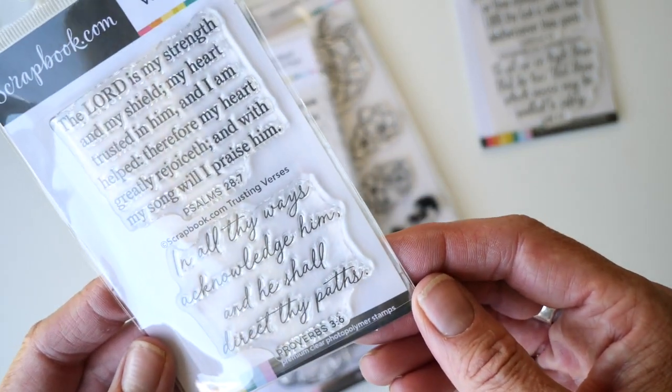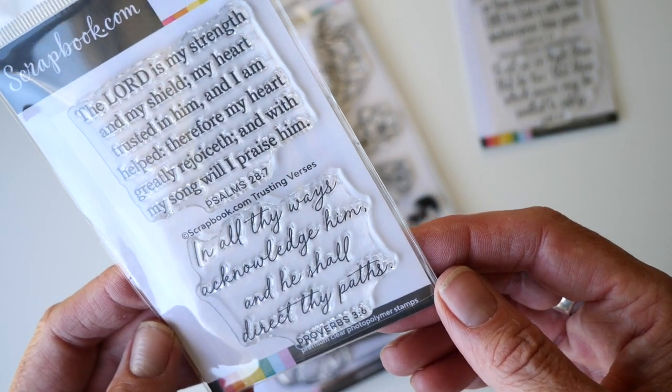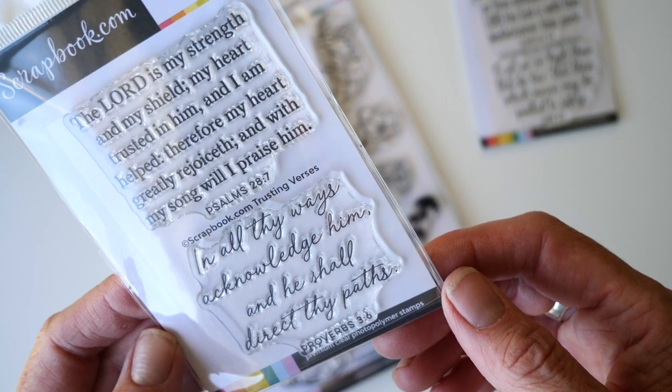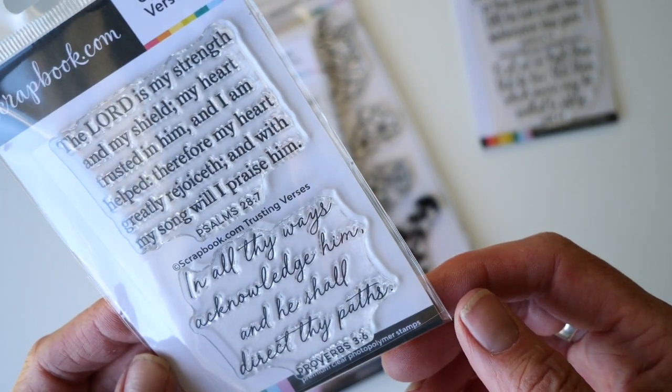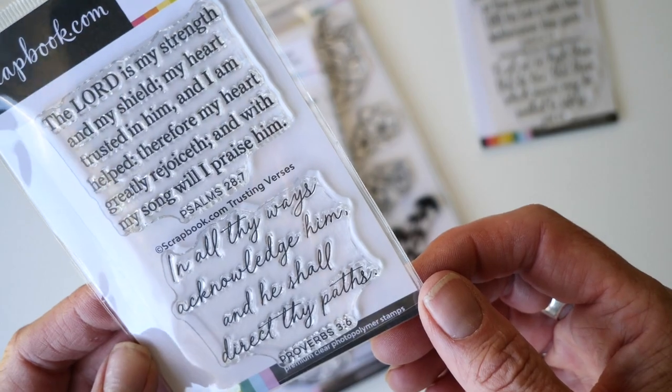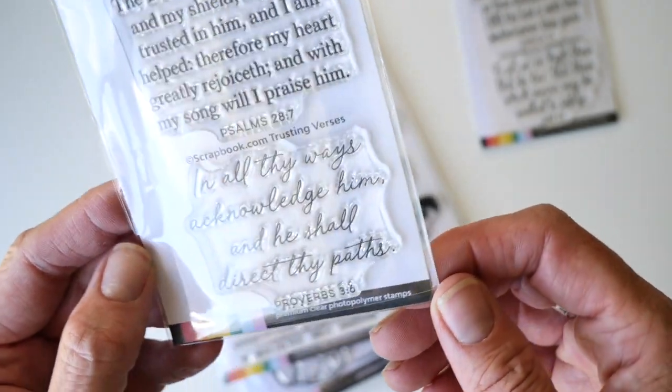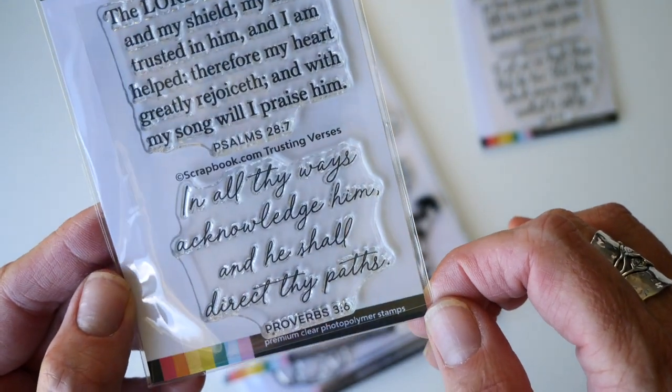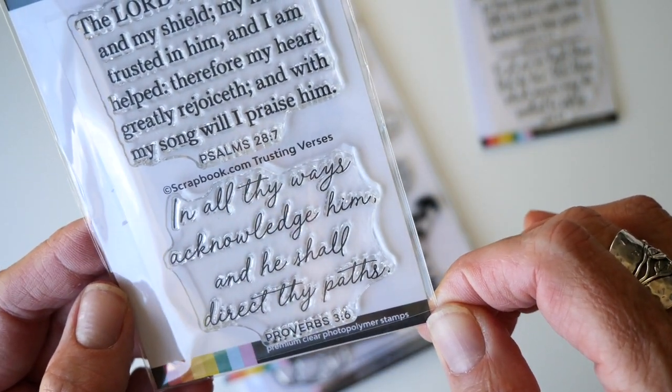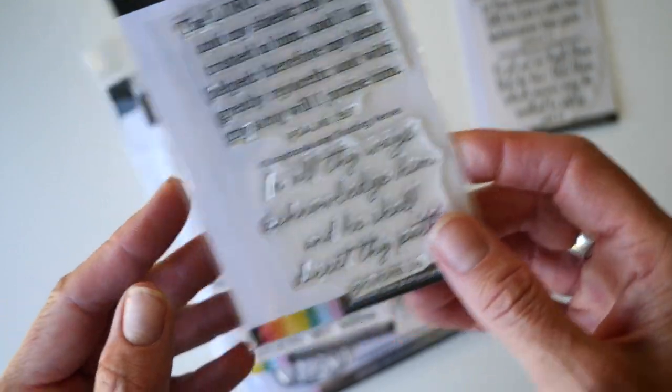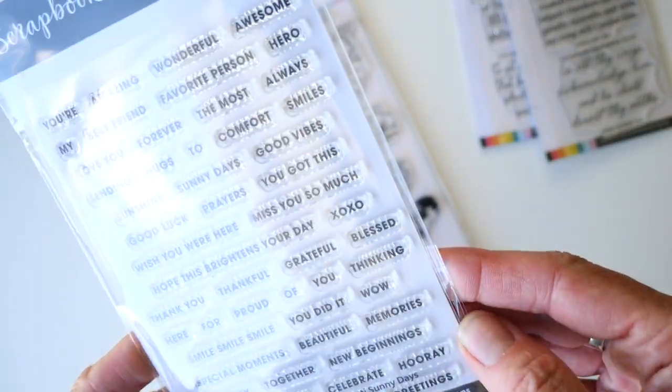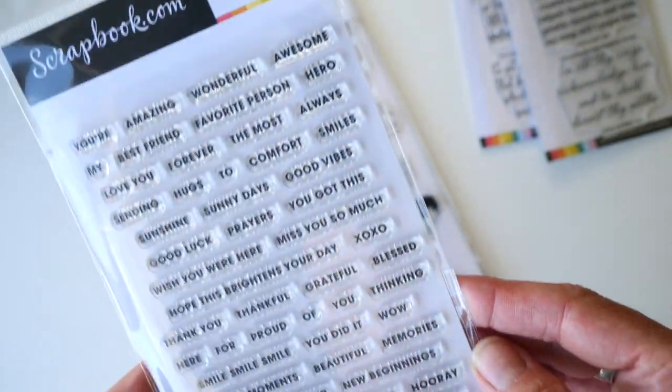We have these uplifting verses. First we have Psalm 28:7, The Lord is my strength, my shield, my heart trusted in him and I am helped, therefore my heart greatly rejoices and with my song will I praise him. Beautiful. Then we have this lovely handwritten font, Proverbs 3:6, excellent verse: In all thy ways acknowledge him and he shall direct thy path.